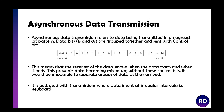Asynchronous data transmission, which is what USB uses, refers to data transmitted in an agreed bit pattern. Ones and zeros are grouped together with a start bit and a stop bit at each end. This means the receiver knows when the data starts and when it ends, so data doesn't get mixed up. Without these control bits you'd just have a stream of ones and zeros with no way to interpret them. It's best used where you're not sure when data will arrive — like a keyboard, since people type at different speeds.